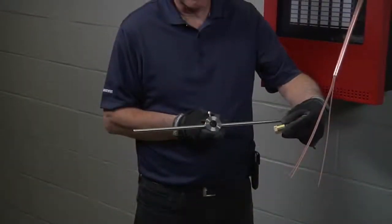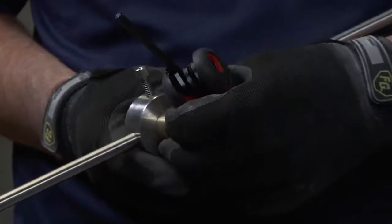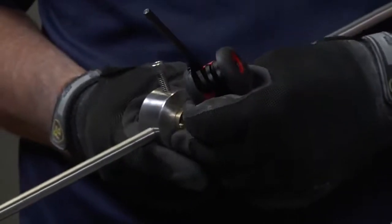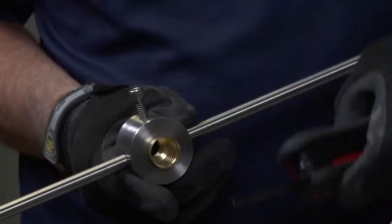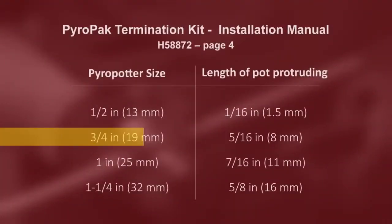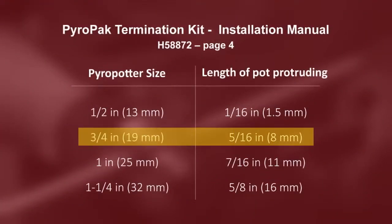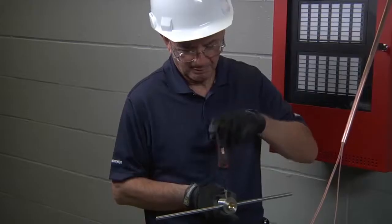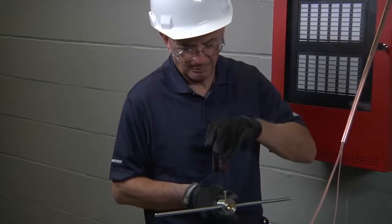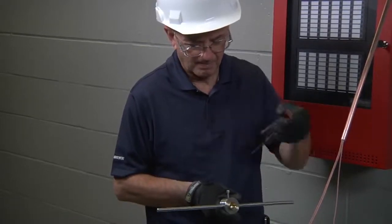Place the self-threading pot onto the non-threaded end of the PyroPotter tool with the larger hole of the pot facing outwards and protruding past the end of the tool. To know how much length of the pot to leave protruding past the end of the PyroPotter tool, reference this table also available in your termination kit's instruction manual. Tighten the screw on the pot with an allen key, ensuring that the allen screw is tightened onto the knurled end.